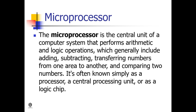Another definition: the microprocessor is the central unit of a computer system that performs arithmetic and logic operations, which generally include adding, subtracting, transferring numbers from one area to another, and comparing two numbers. It is often known simply as a processor, a central processing unit, or a logic chip. It is essentially the engine or the brain of the computer that goes into motion when the computer is switched on. It is a programmable, multi-purpose device that incorporates the functions of a CPU on a single integrated circuit (IC).